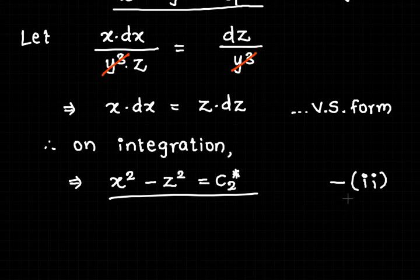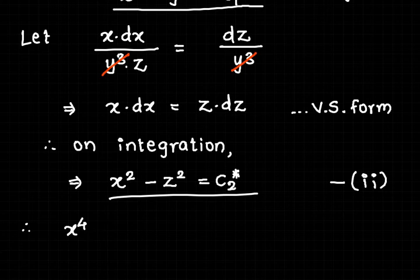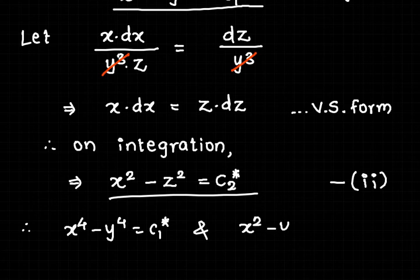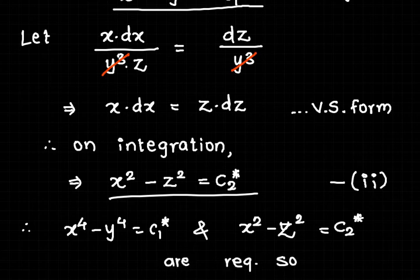In the first solution we obtained variables x and y; in the second solution we obtained variables x and z. Both are linearly independent. Therefore, the required solutions are x⁴ − y⁴ = c₁* and x² − z² = c₂*. In this way we have solved the first problem.